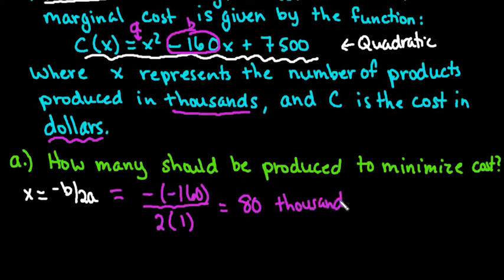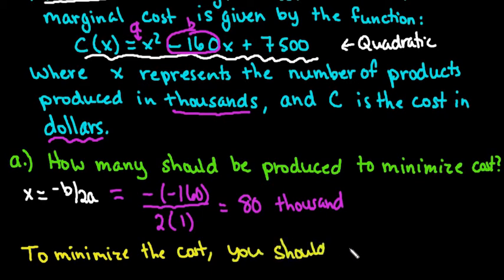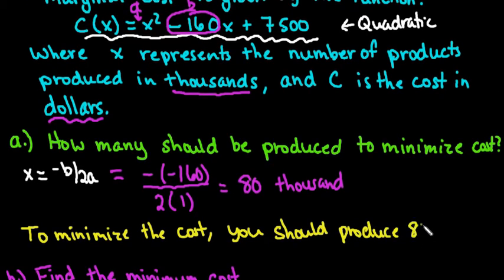That tells us that to minimize cost, and it's always important to write a sentence. To minimize the cost, you should produce 80,000 units. This one does not tell us the context. It could be bicycles, it could be any product. It doesn't tell us.